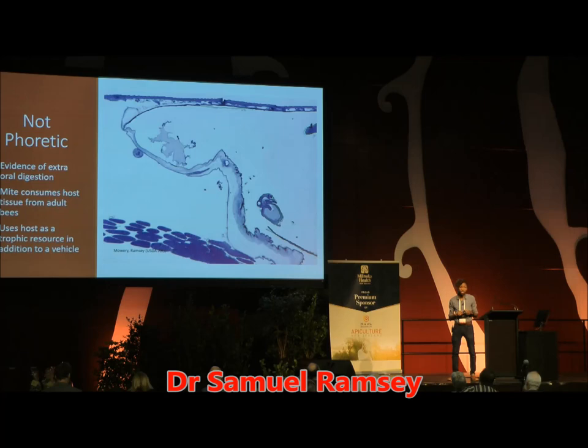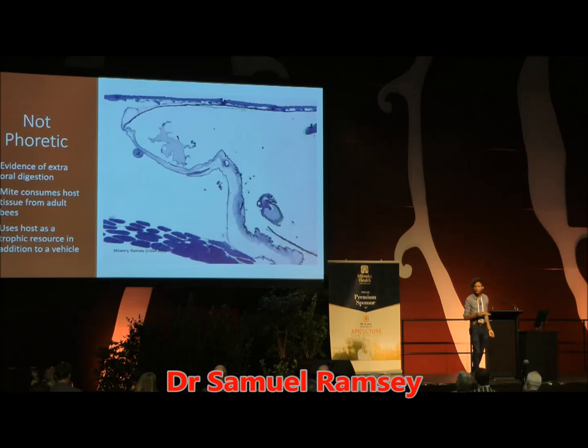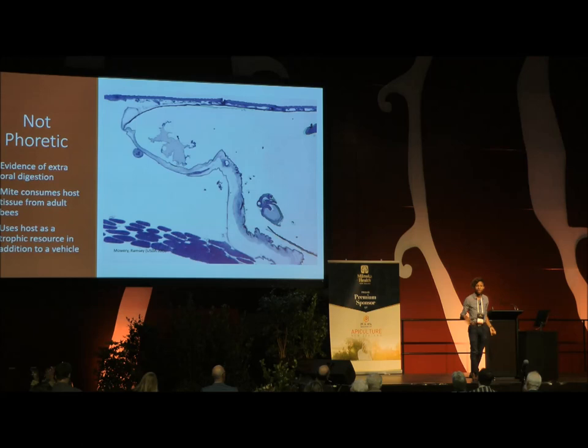The tissue that they are targeting is of great concern to beekeepers because the fat body tissue does a lot of things in your bees. This image makes it clear to us that we have been using the wrong term for a whole section of the Varroa life cycle. When they are on your adult bees, they are not just sitting there, they are not just waiting for their reproductive cycle to get restarted — they are actively feeding on your adult bees.